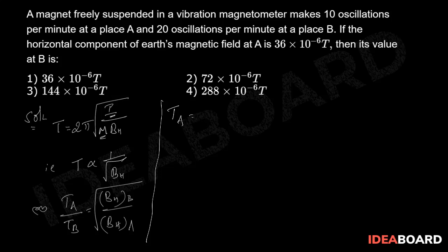At place A, the frequency of oscillation is 10 oscillations per minute, so the time period TA is 60/10 seconds. At place B, the frequency is 20 oscillations per minute, so the time period TB is 60/20 seconds. The value of BHA is given as 36×10⁻⁶ tesla.